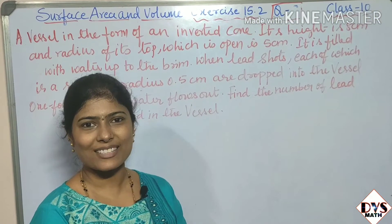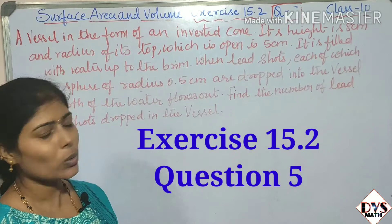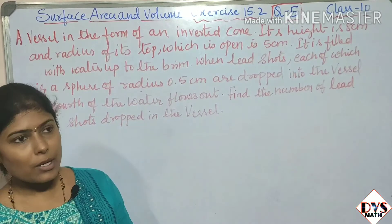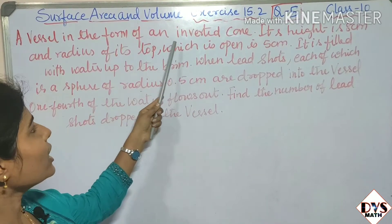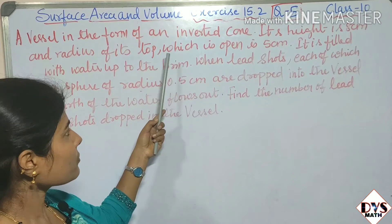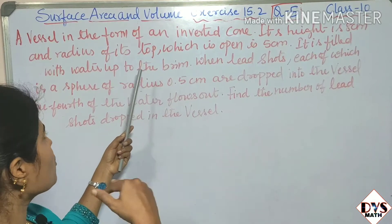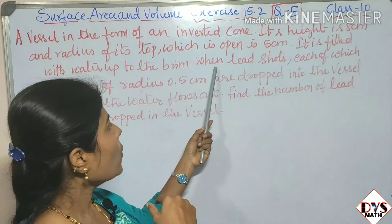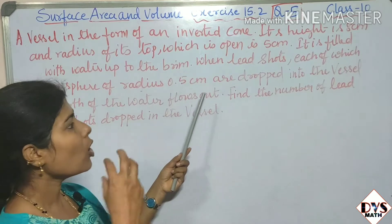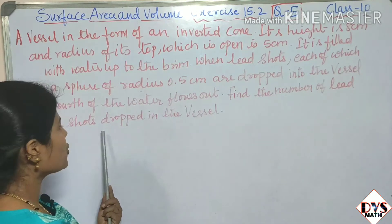Hi, welcome to DBS Math. I'm Deepa Prasad, continuing with Surface Area and Volume, Exercise 15.2, Question Number 5. The question is: a vessel is in the form of an inverted cone. Its height is 8 cm and the radius of its top, which is open, is 5 cm. It is filled with water up to the brim. Lead shots, each of which is a sphere of radius 0.5 cm, are dropped into the vessel. One-fourth of the water flows out. Find the number of lead shots dropped in.